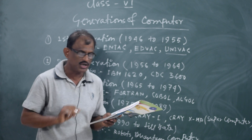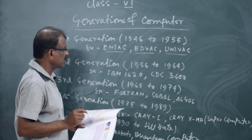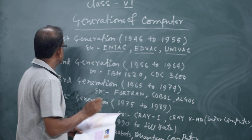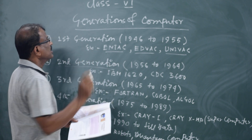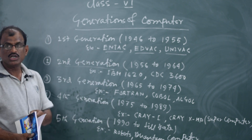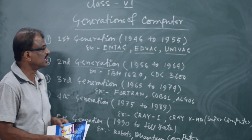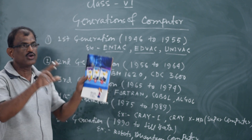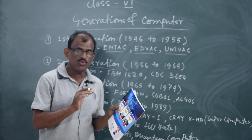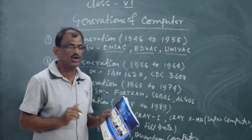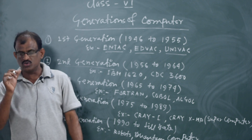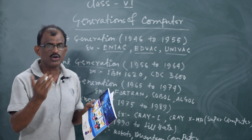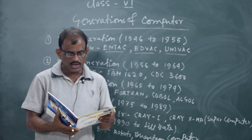The full form of ENIAC, EDVAC, and UNIVAC noted. In the second generation computer, the vacuum tube or electronics valve was replaced by the transistor.